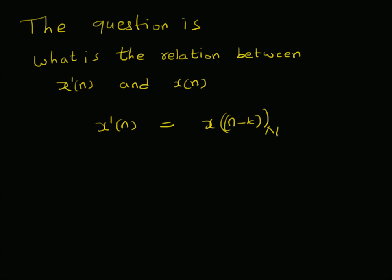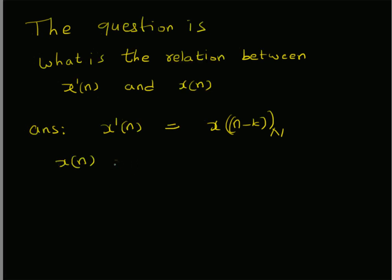So let us try to understand this relation. In terms of the relation between x'(n) and x(n), x'(n) is equal to x(n minus k), that is, the shifted version mod N. Consider a simple example where x(n) equals 1, 2, 3, 4 — that is, x(n) is 1, 2, 3, and 4 for n equal to 0, 1, 2, and 3.